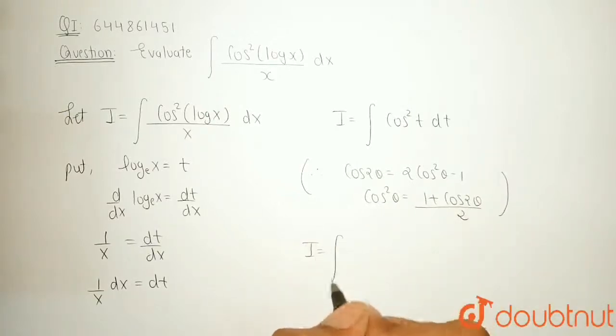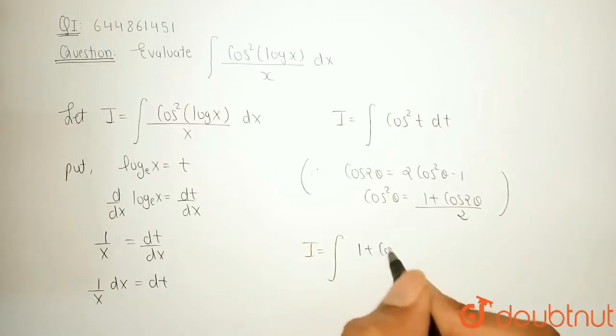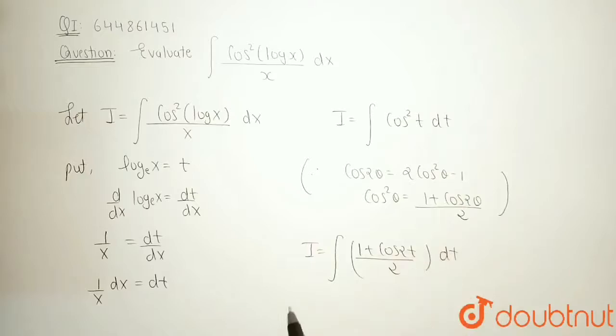I can substitute this. So, this integration becomes 1 plus cos 2t upon 2 dt. I can separate this integral.